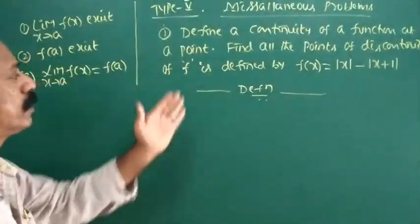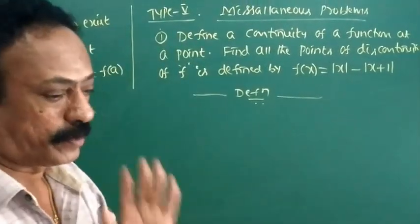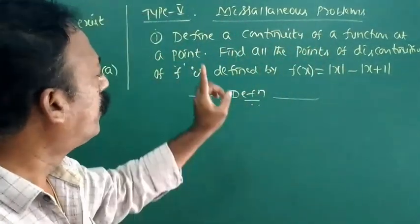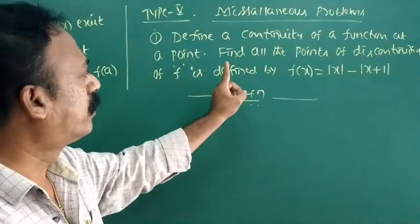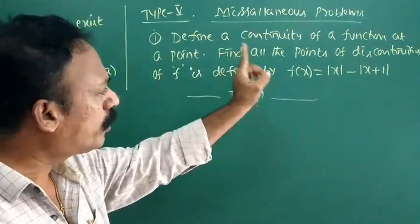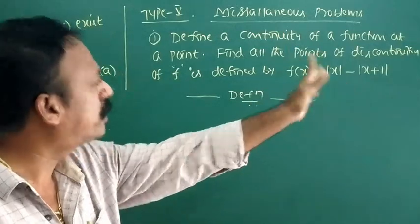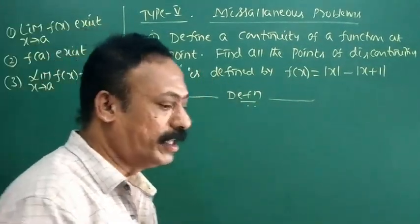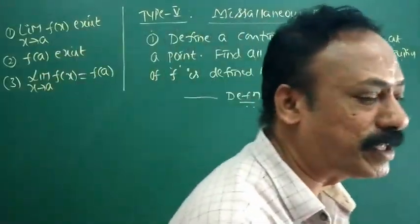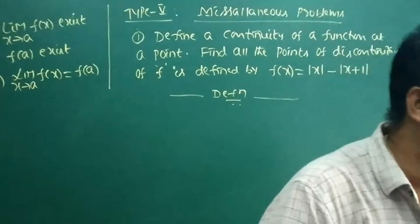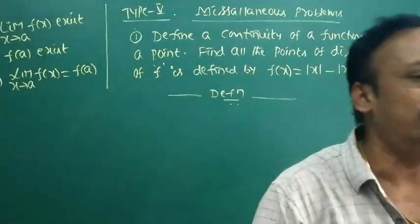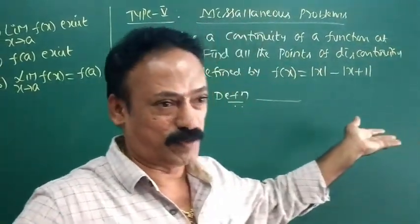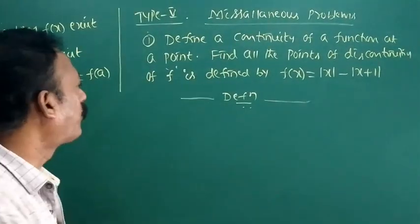Next, let's come to the second part. The question is: find all the points of discontinuity of f, defined by f of x is equal to mod x minus modulus of x plus 1.